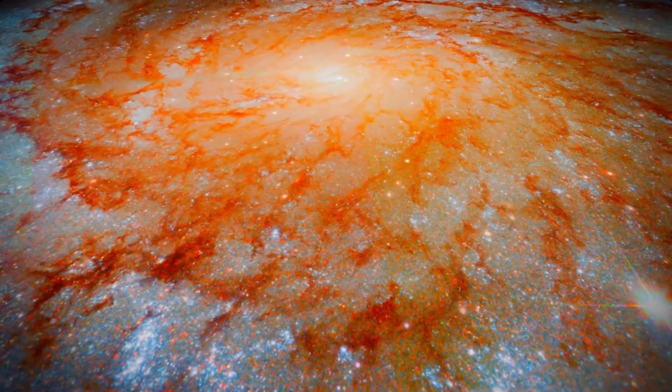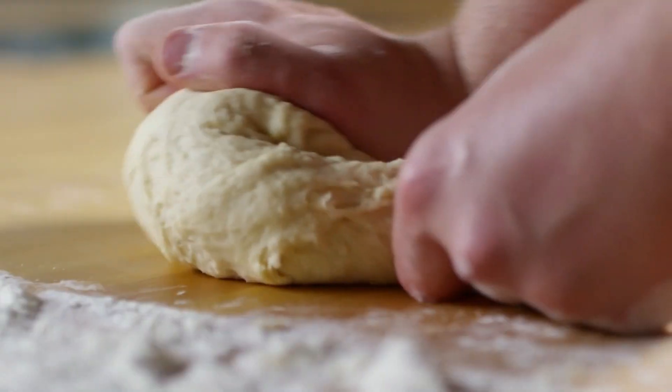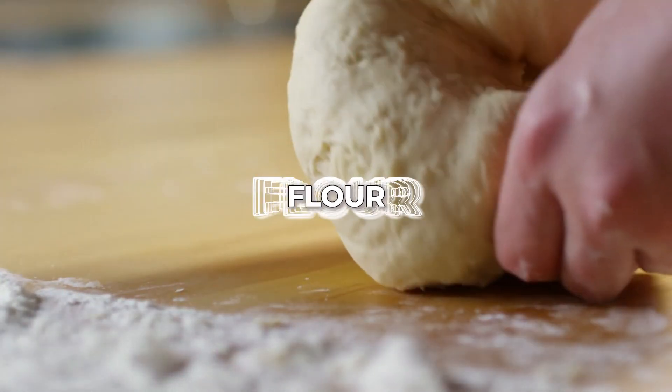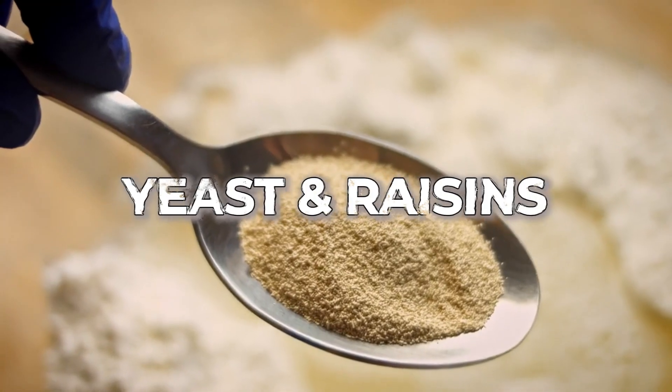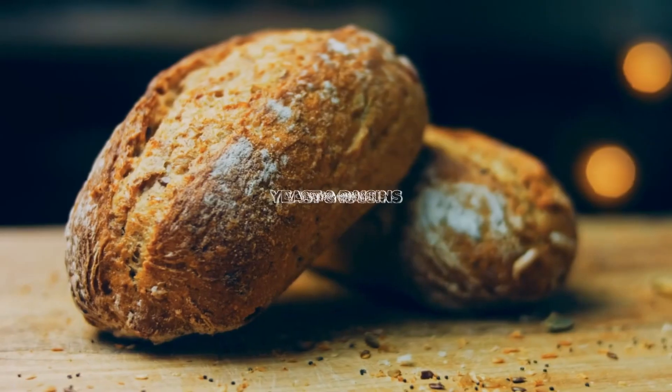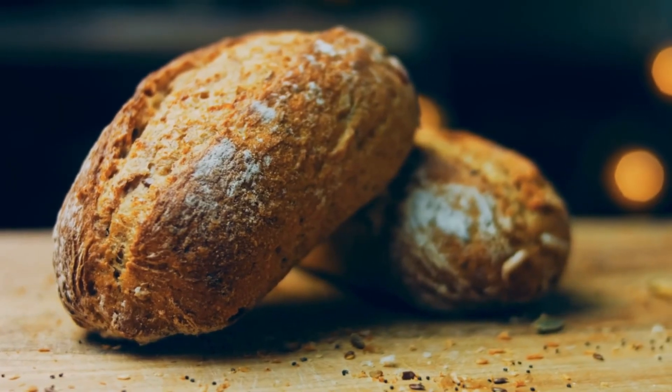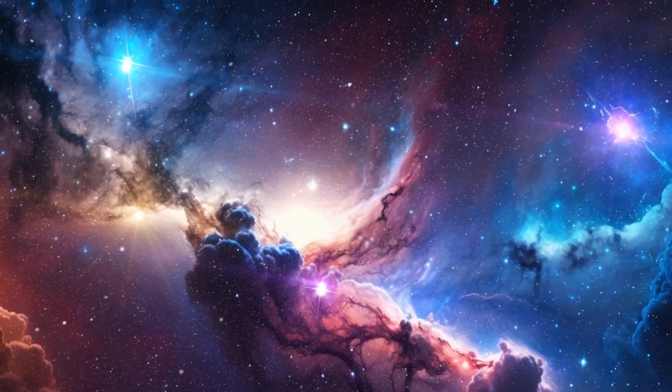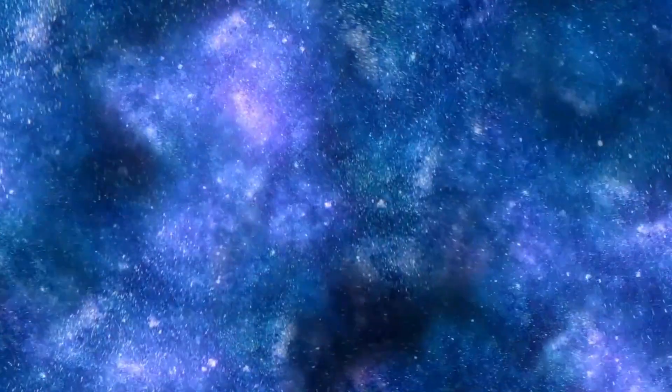Visualize the universe as a loaf of raisin bread. Initially, it's a mixture of flour, water, yeast and raisins. As the yeast activates, the loaf rises and the raisins, symbolizing galaxies, drift farther apart.